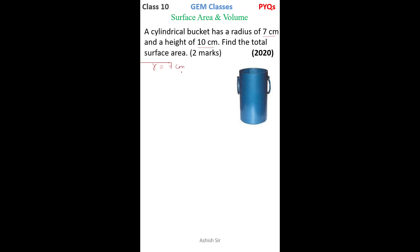We need to find out TSA of the cylinder. So we write TSA of cylinder is equal to, according to formula, 2πr(h+r). So we apply the values: 2 × 22/7 × radius 7 × (height 10 + 7).